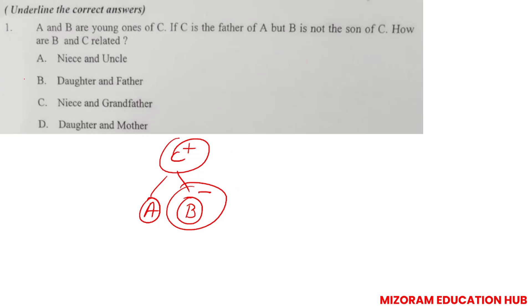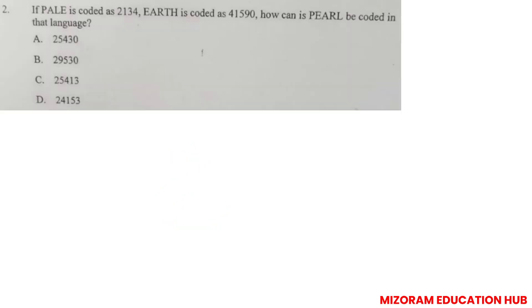Next question: If PALE is coded as 2134, EARTH is coded as 41590, how can PEARL be coded? P-E-A-R-L. So 2134, same way E-A-R-T-H coded as 41590.